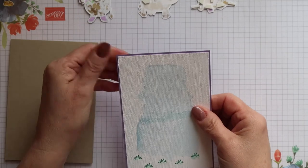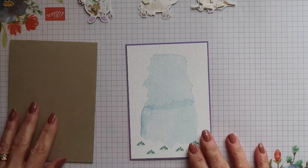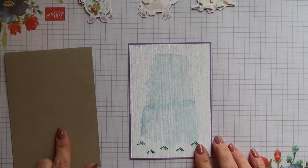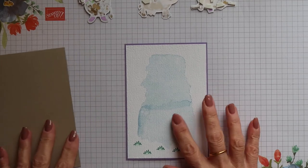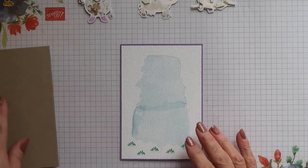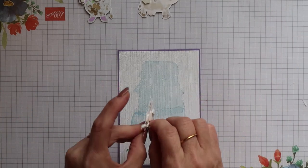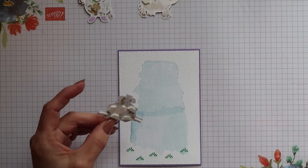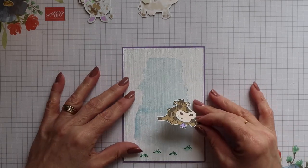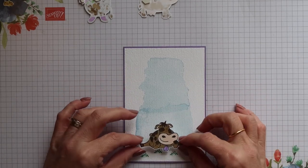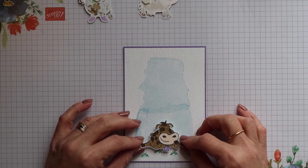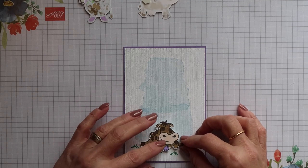Now if you want to you can go ahead and glue this panel onto the front of your card base. I'm not going to though, I'm going to build my stack of cows first before I do that. So you want to remove the backings from the dimensionals on the reverse and then position your bottom cow where you want him towards the bottom of the card.